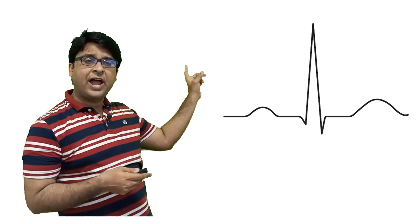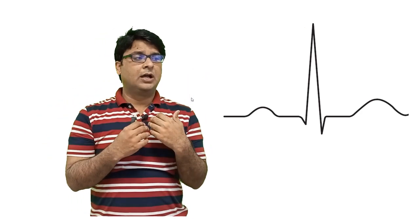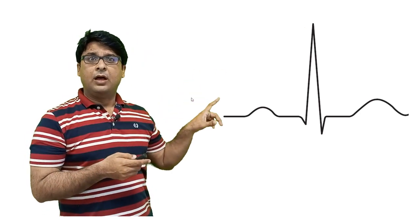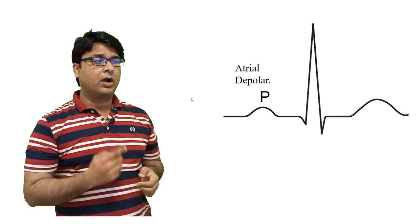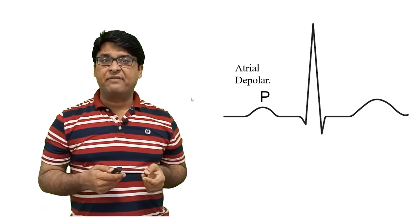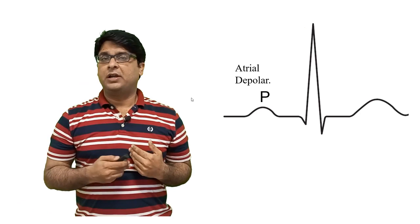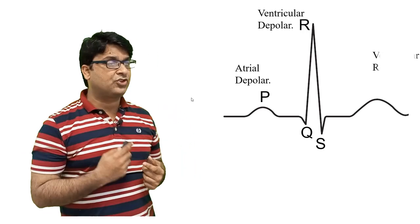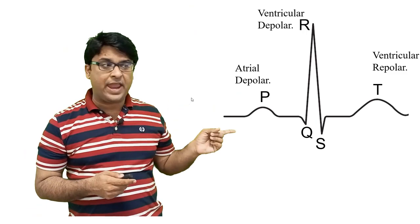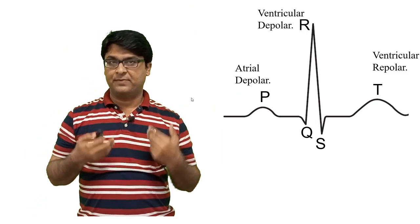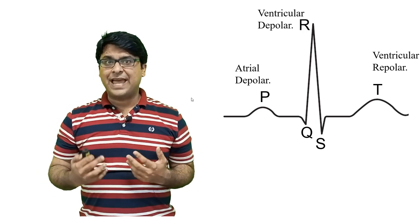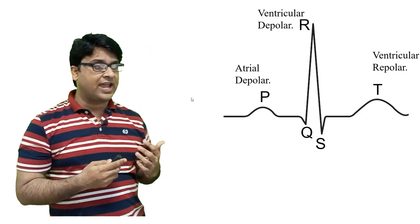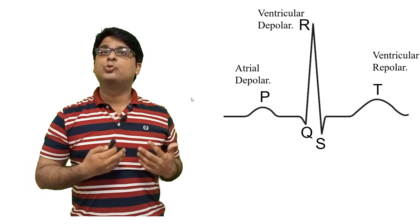Let's begin with this first diagram, which is the normal cardiac cycle represented on an ECG paper. The first part you need to know is the upward curve known as the P wave, which is indicative of atrial depolarization. After this, you see the big QRS complex representing ventricular depolarization. Then the upward blip afterwards is the T wave, which indicates ventricular repolarization.